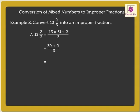Which is equal to 41 upon 3. Thus, 13 and 2 third is equal to 41 upon 3.